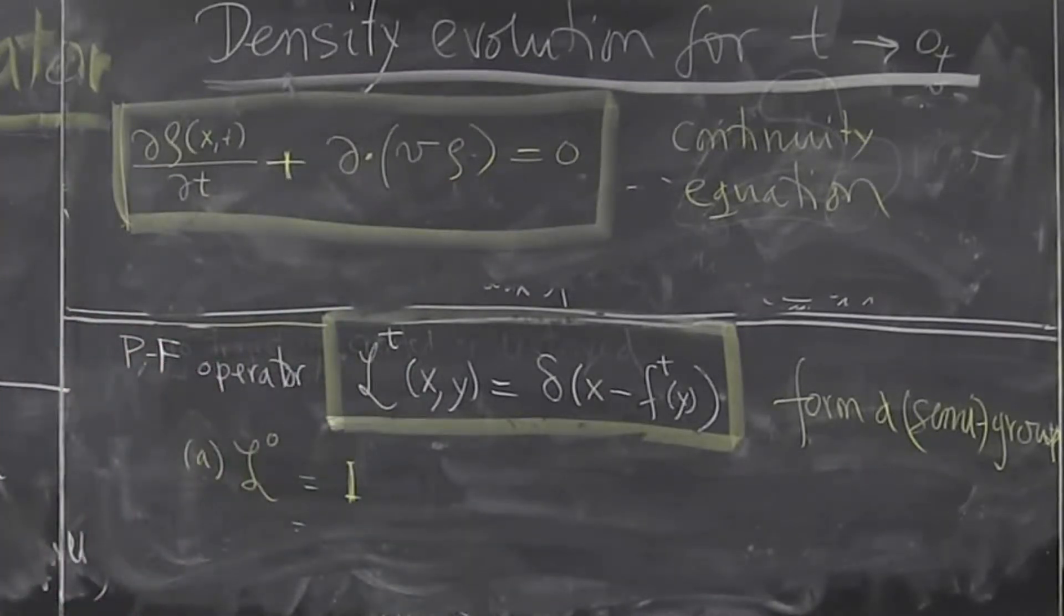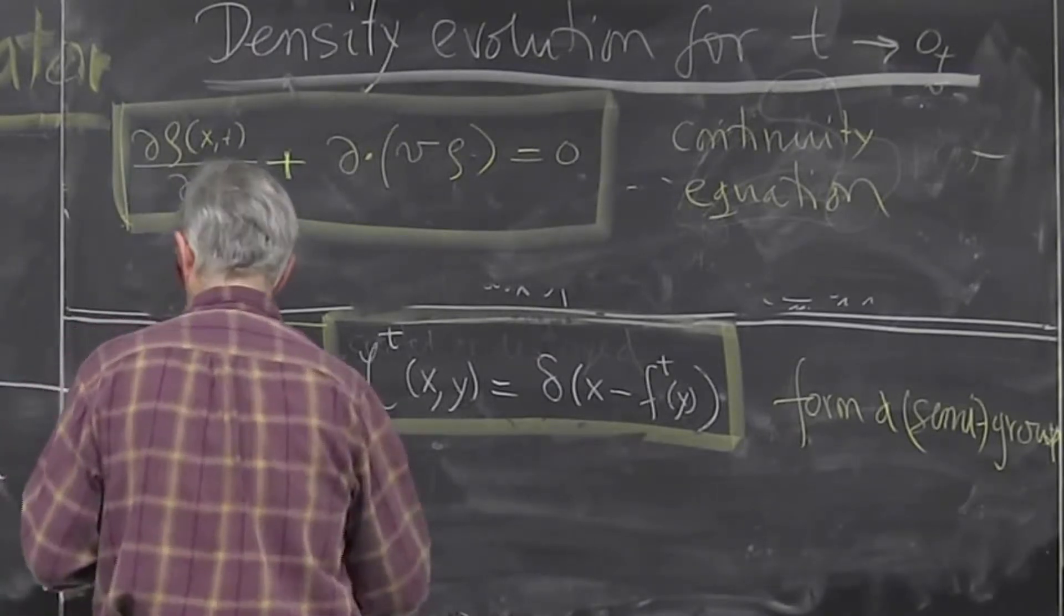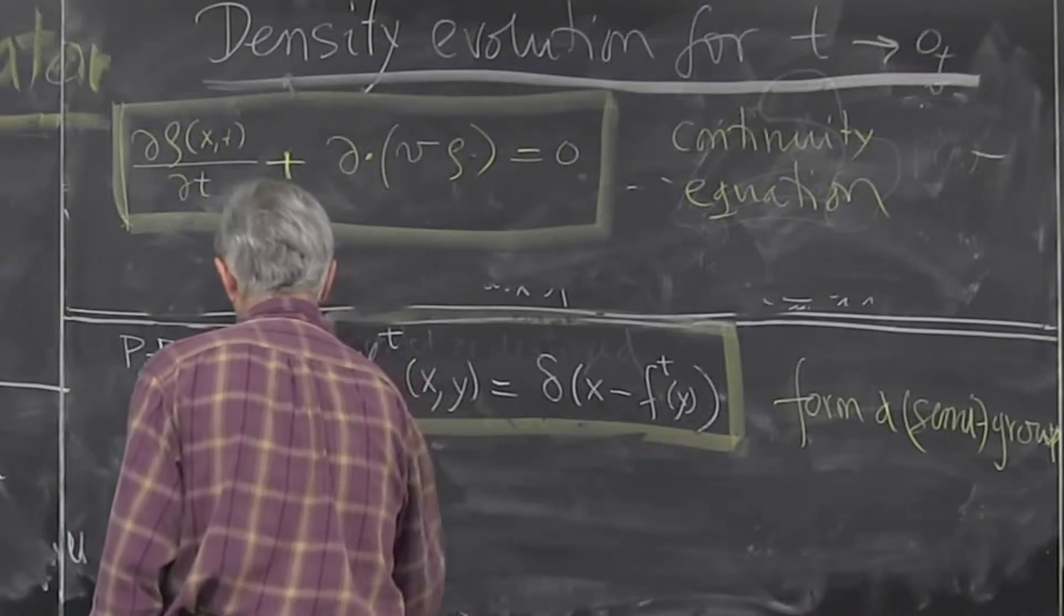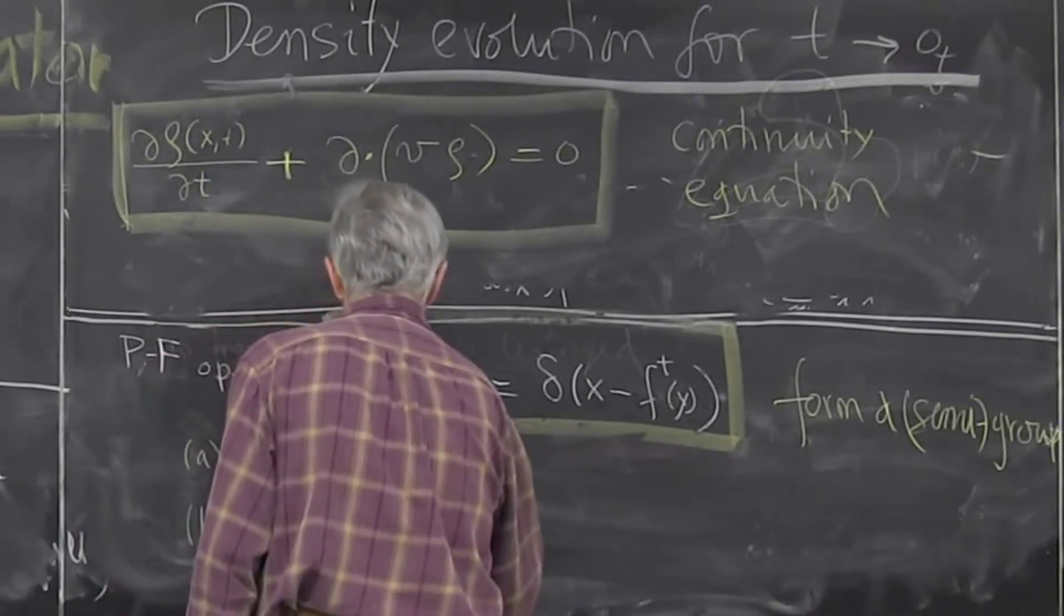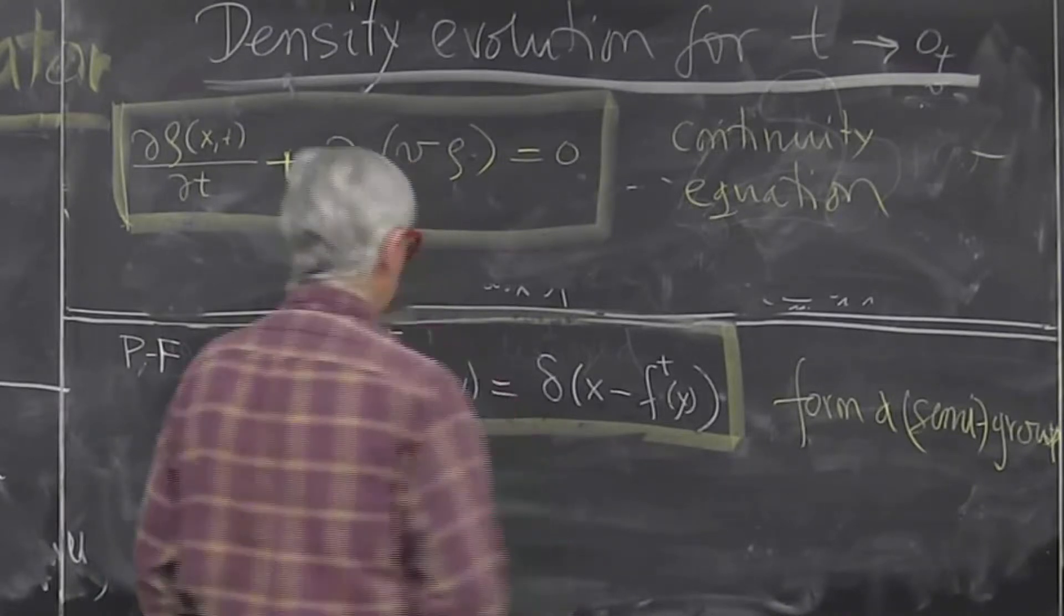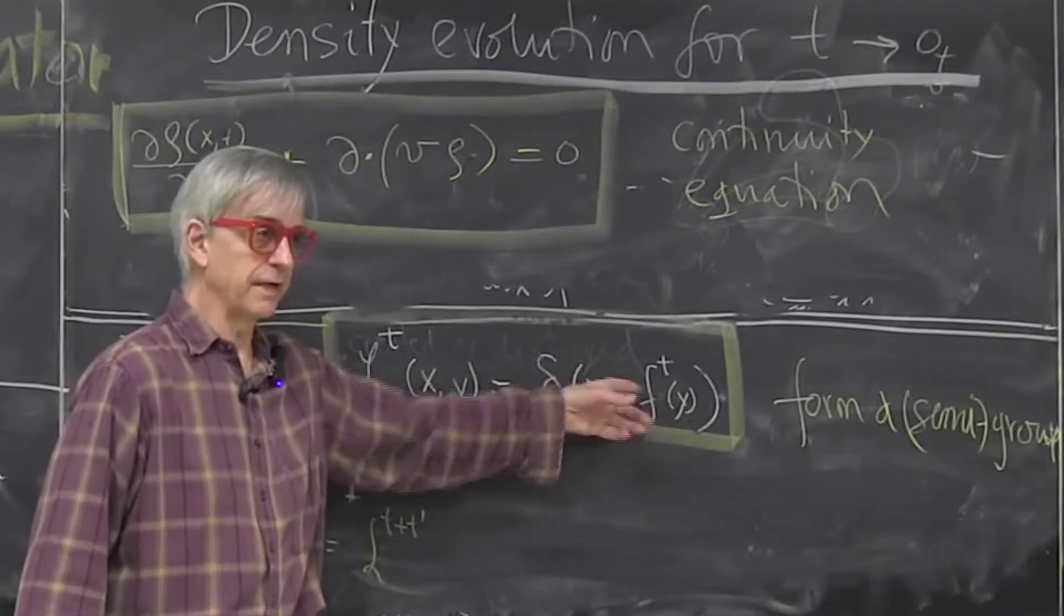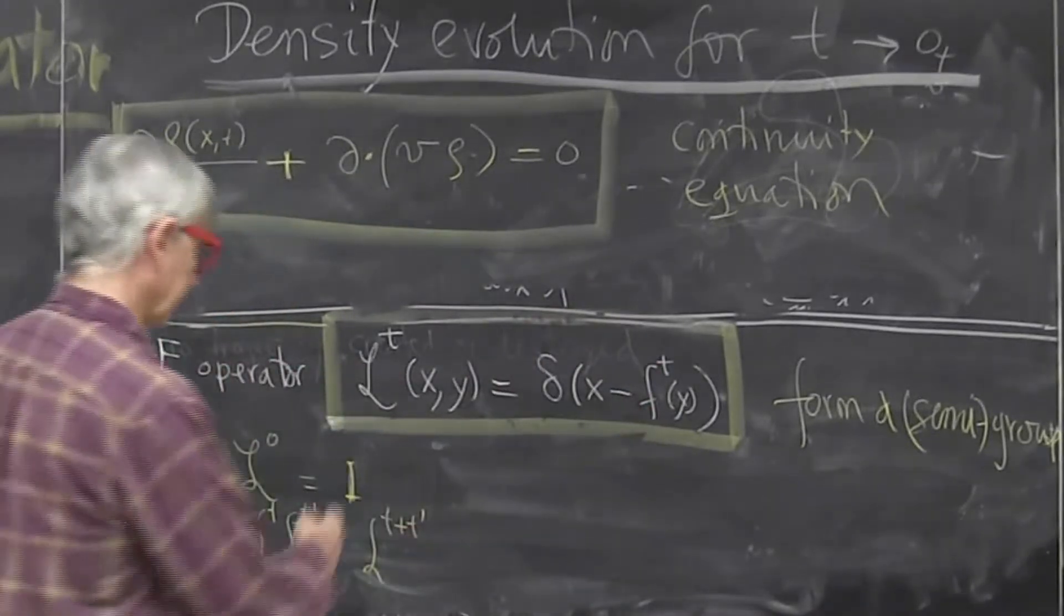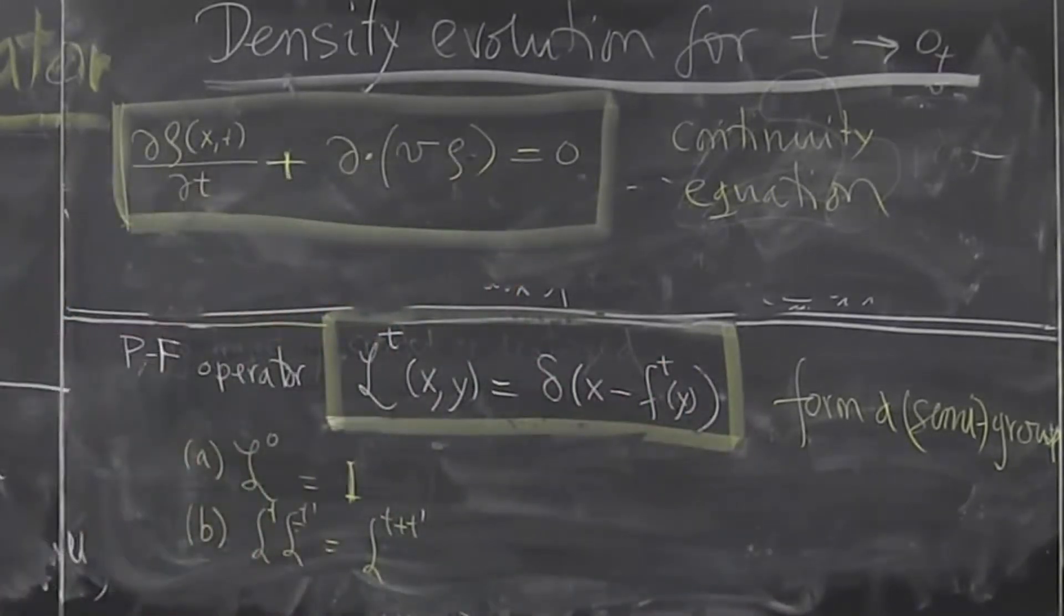It just says the delta function, nothing changed. And if you apply two of them, so you first go time t prime and then you go time t, this is the same as t plus t prime. And that you'll check by putting it into the definition and integrating our delta functions. And then you'll find out that, you know, because these times add up on trajectories, they'll add up on these things.